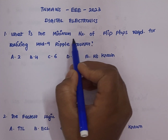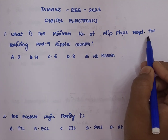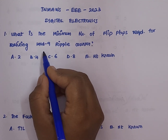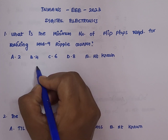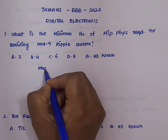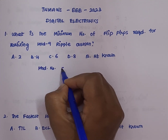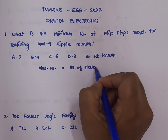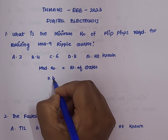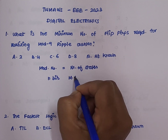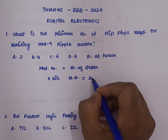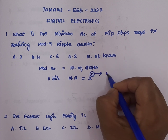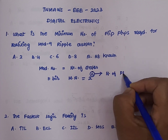The first question is: what is the minimum number of flip-flops required for realizing a mod-9 counter? For this question we need to know the basic rule: the mod number is equal to the number of states. For n number of bits, the mod number will be equal to 2 power n, where n represents the number of flip-flops used.